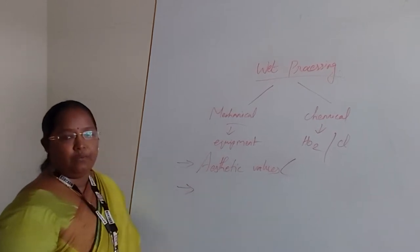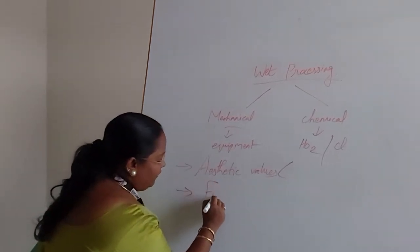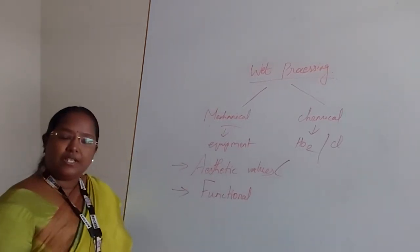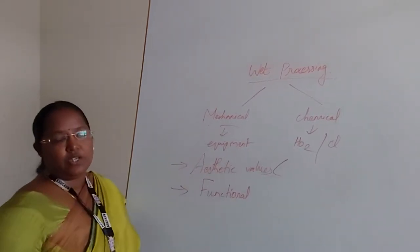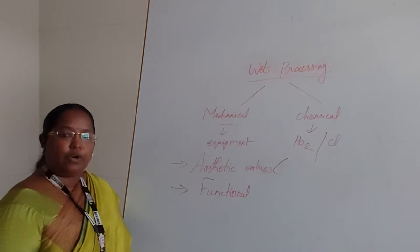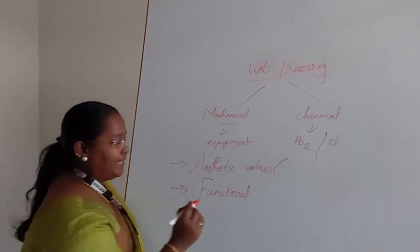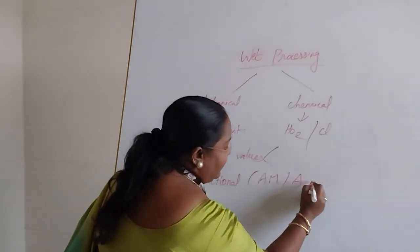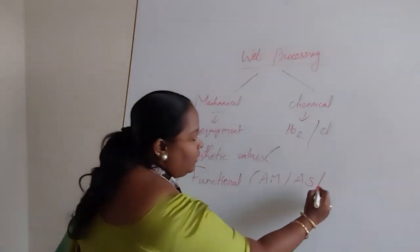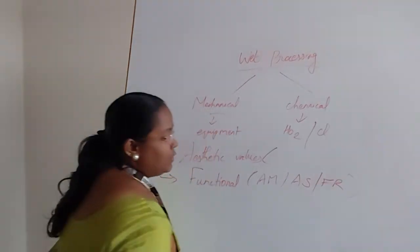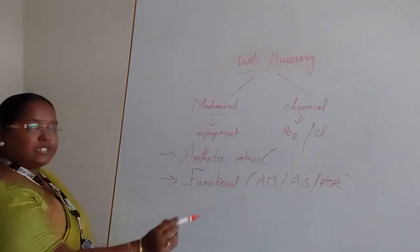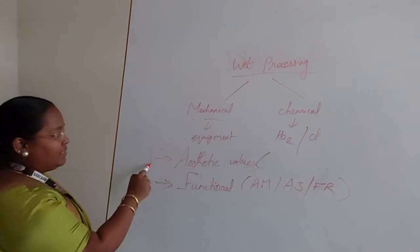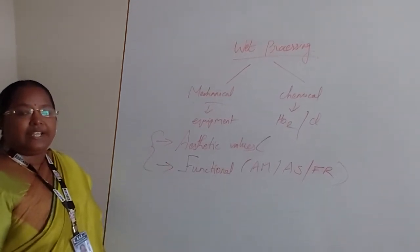There is another type of value called functional. Functional is the additional finishes which can be introduced in the fabric for giving a specific finish — for example, antimicrobial finishes, antistatic finish, or flame retardant. Likewise, we introduce functional finishes based upon the necessity of the fabric. These two finishes are very essential in our textile industry.